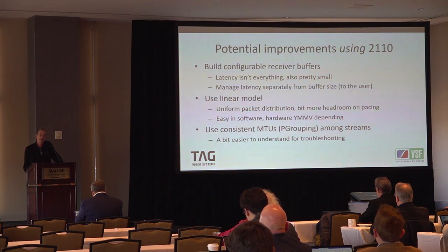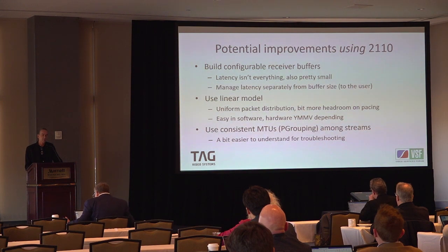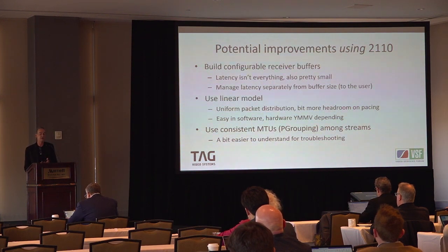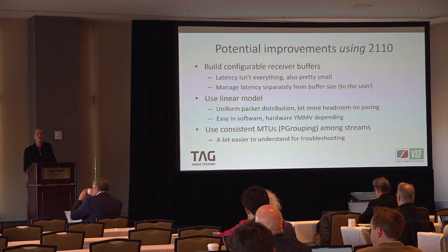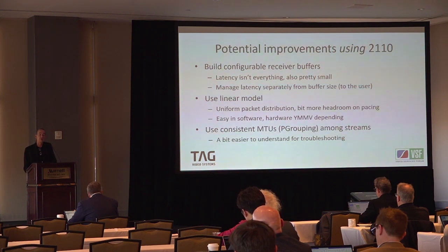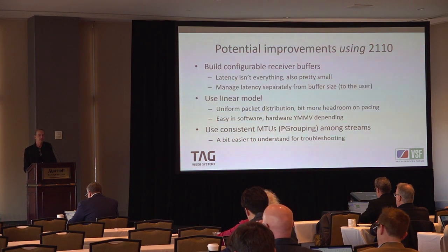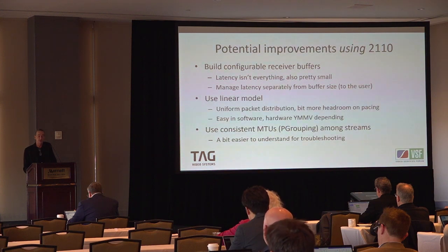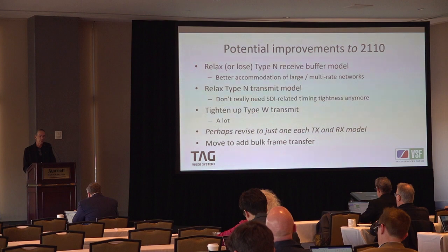Build receiver buffers that are configurable — dial in how much latency and how much packet buffer you want. Latency is very small compared to a frame time. Manage latency separately from buffer size, and present those as two different contexts to the two kinds of users: people who deal with the network, and people who deal with the video system. Using the linear model will space out packets more, buying more headroom — no vertical gap, less burst at vertical sync time, and a uniform packet distribution. That's easy in software, and entirely possible in hardware with a bit of buffer. Consistent MTUs and consistent P grouping among streams also helps troubleshooting.